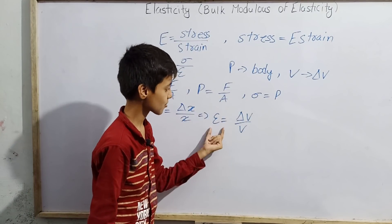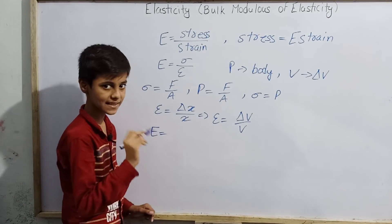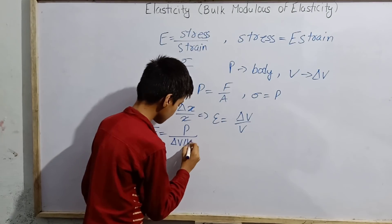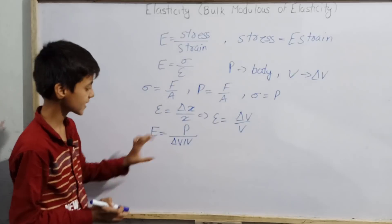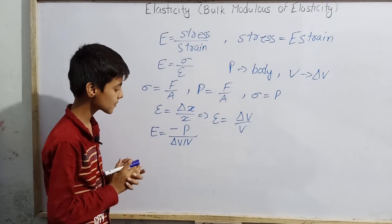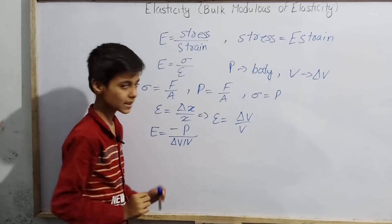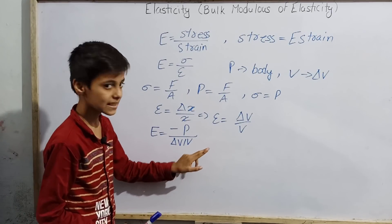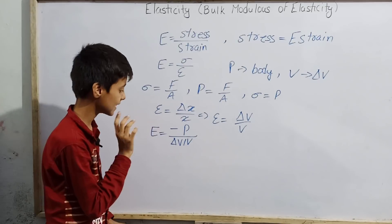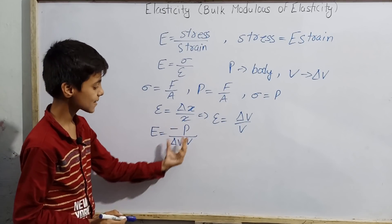Modulus of elasticity is stress divided by strain, so we divide P by (delta V / V). So E equals P divided by (delta V / V). Now, remember that a negative symbol will be put on P. This negative symbol indicates that as pressure increases, the volume decreases — we all know that as pressure increases, the volume of a body decreases. This minus symbol indicates the same point.